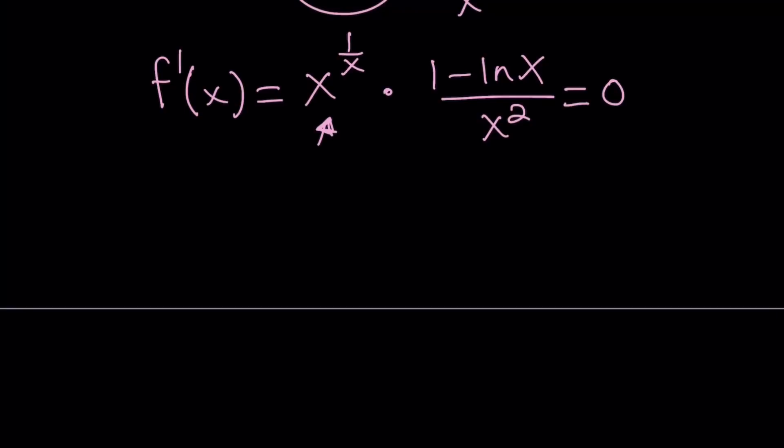Anyways, so we're just going to set this equal to 0 and that's going to give us 1 minus ln x equals 0, which means ln x equals 1. And from here, we get x equals e.